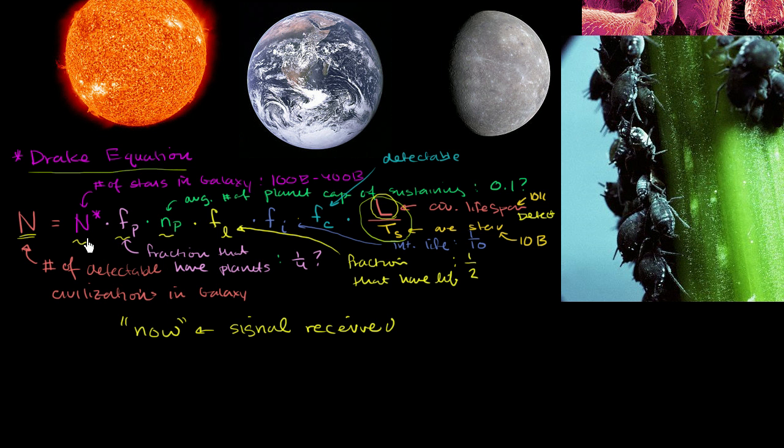This is the number of stars, our estimate of the number of stars in the galaxy. You multiply by this, you now know the number of stars in the galaxy that have planets. You multiply by this n sub p, the average number of planets capable of sustaining life and these first three terms will give you the total number of planets in the galaxy that have been capable of sustaining life at some point in their history.